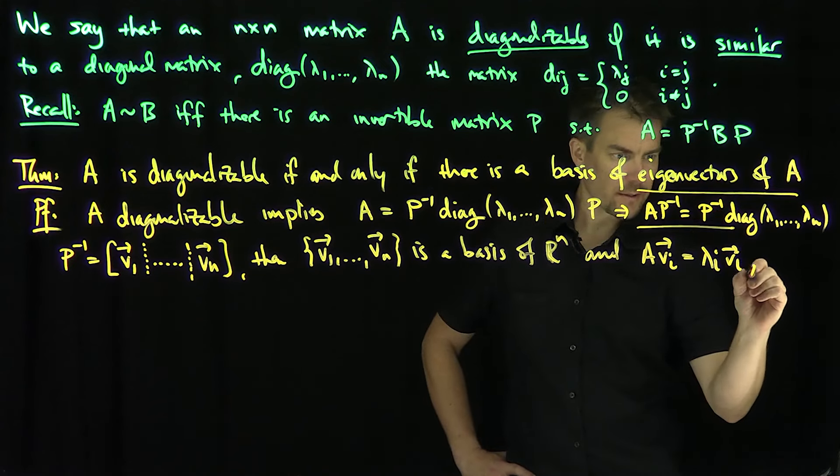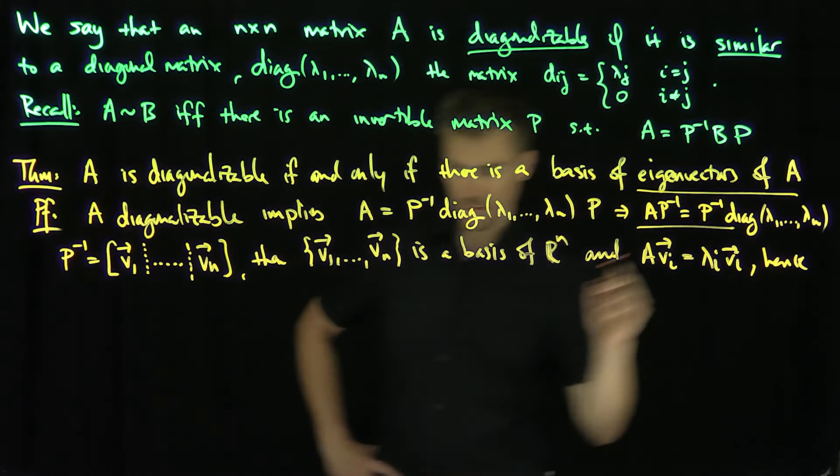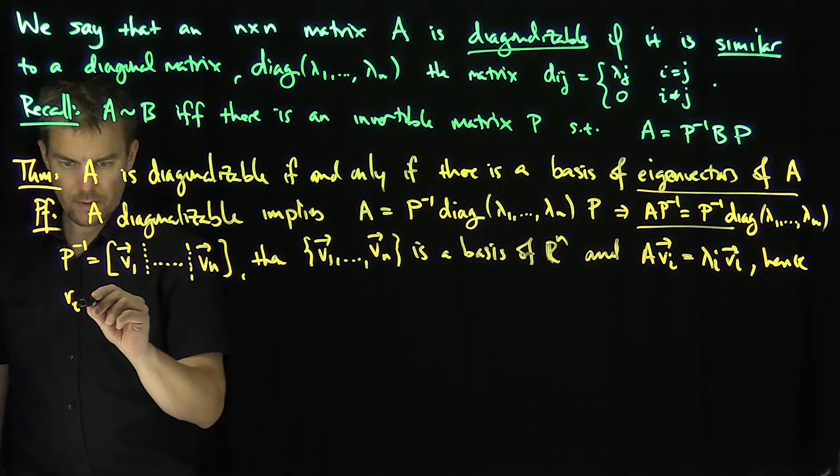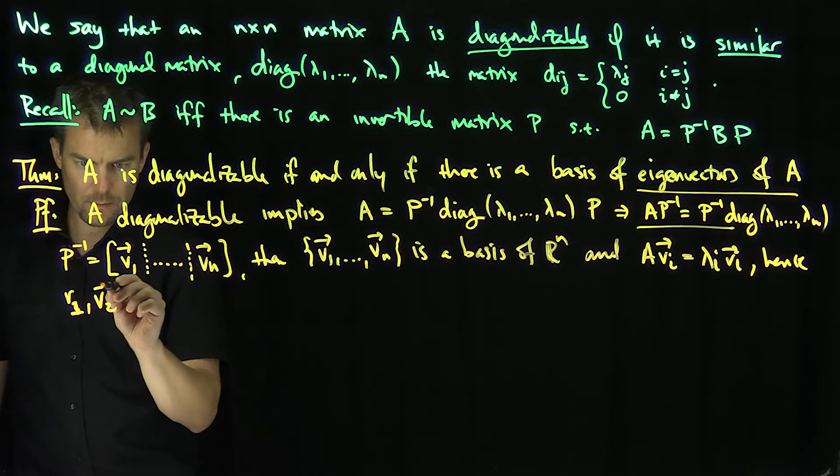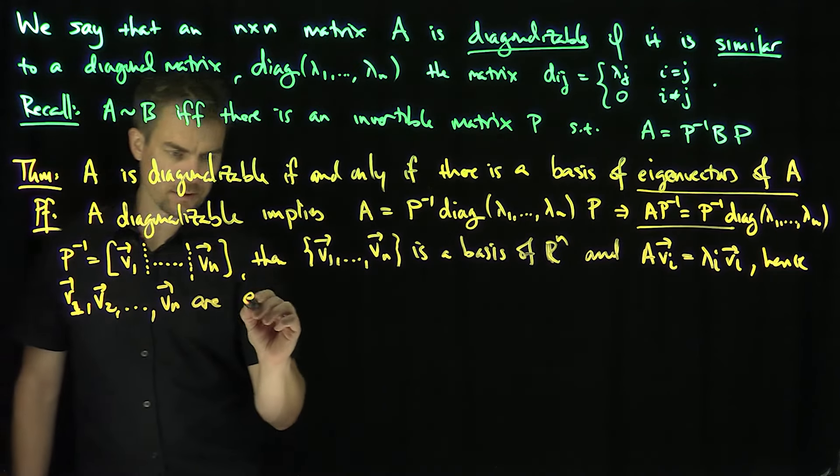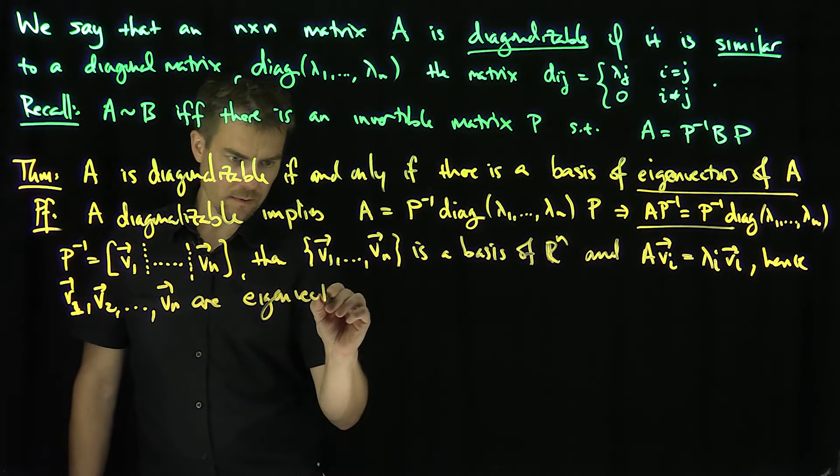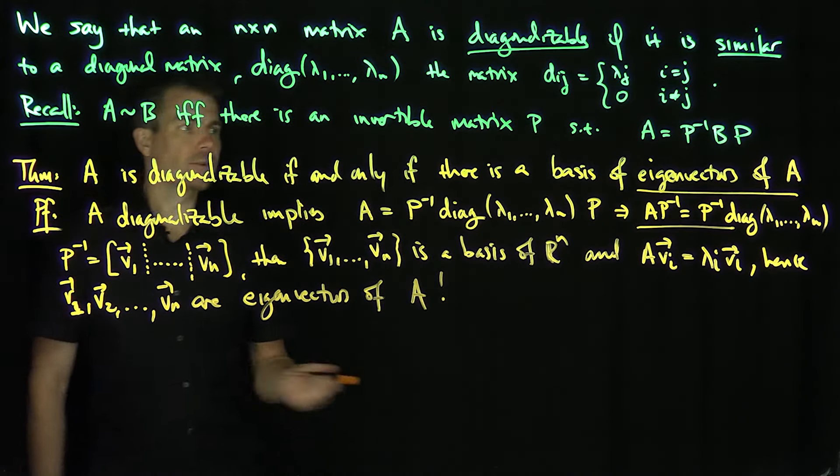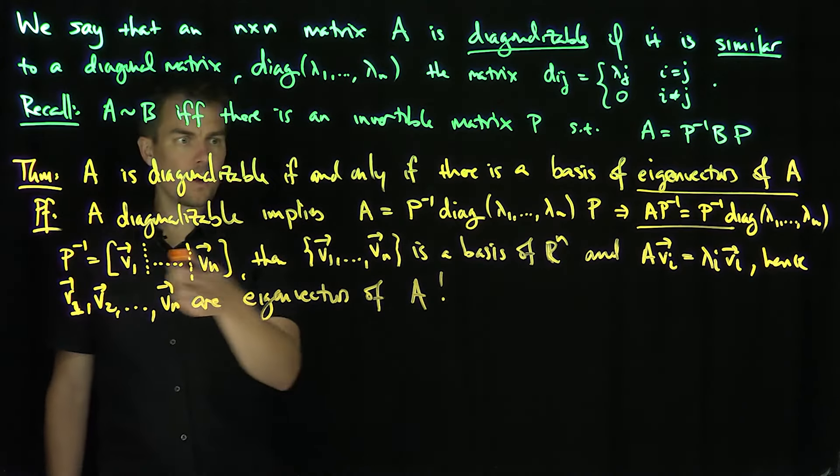This implies, hence v₁, v₂,...,vₙ are eigenvectors of A. Now suppose that there's a basis of eigenvectors.